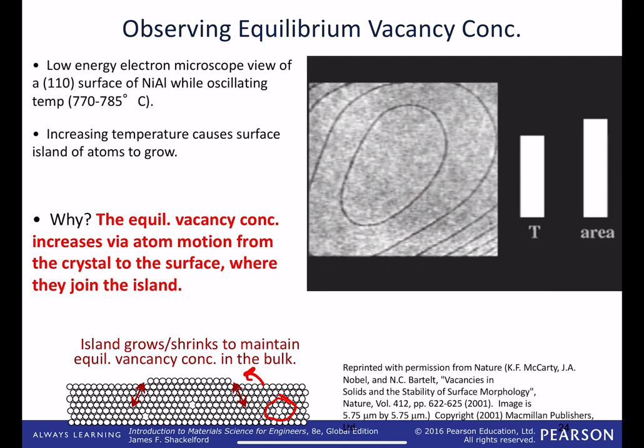So here's a low-energy electron microscope view of the top of a nickel-aluminum alloy that we now understand a little bit. So a solid solution here. It is the 1.1.0 surface of this alloy. And we're going to oscillate the temperature from a low temperature value to a little bit higher, 770 to 785. You can see that temperature range reflected here. So here's our thermometer going up and down.